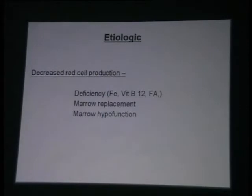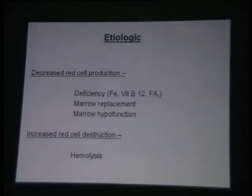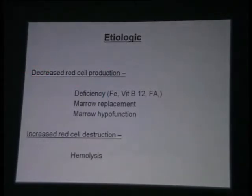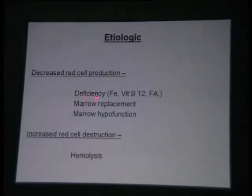There can be two classifications of anemias: etiologic or morphologic. Coming to the etiologic classification, it is basically either decreased red cell production or increased destruction. Decreased production can be due to either deficiency of some factors or it may be replaced marrow.